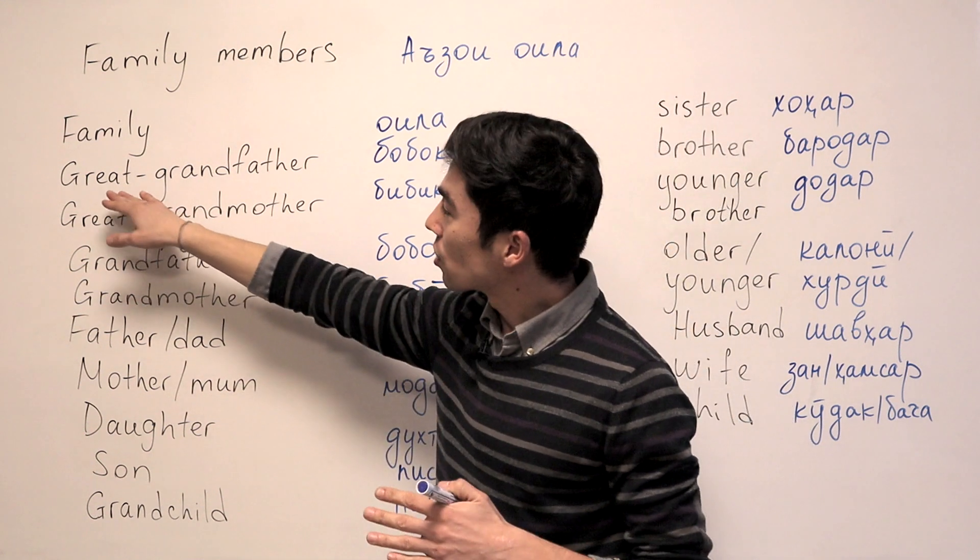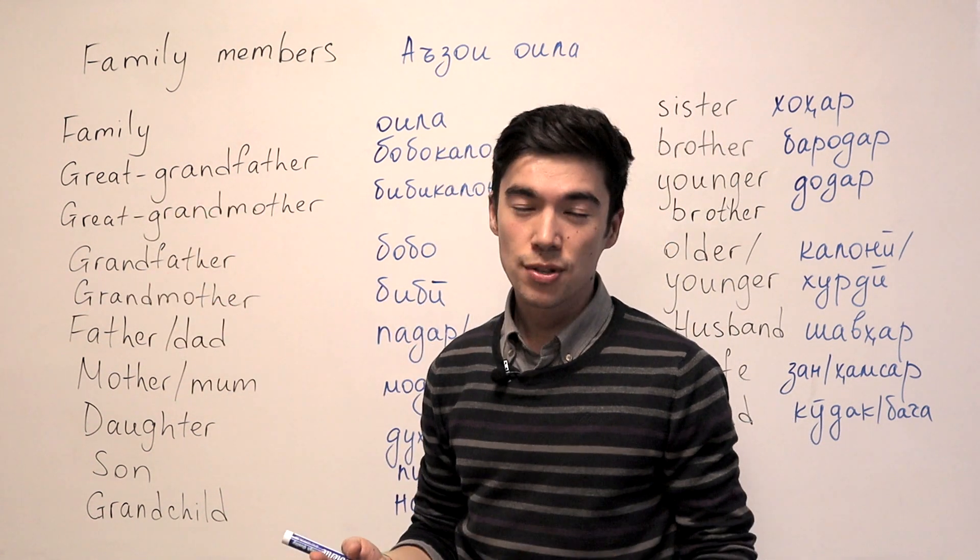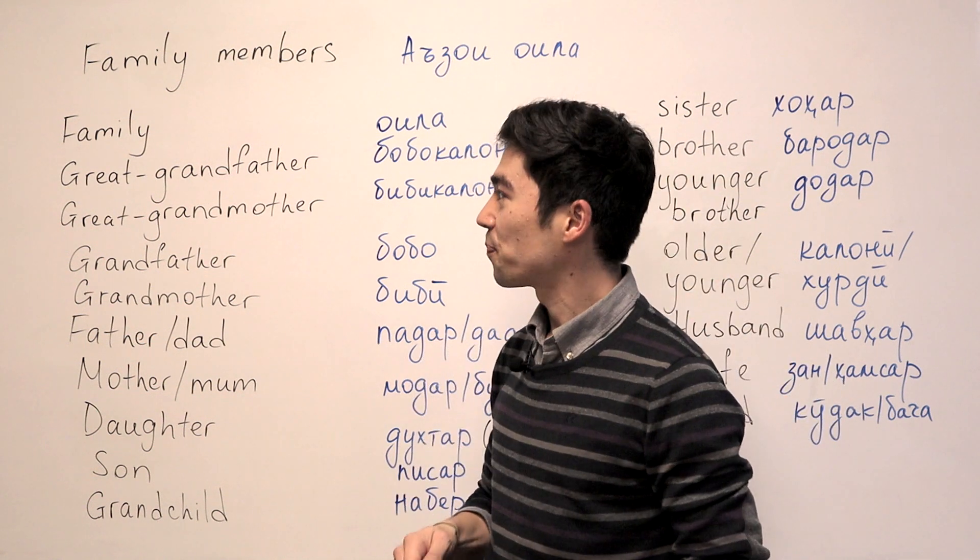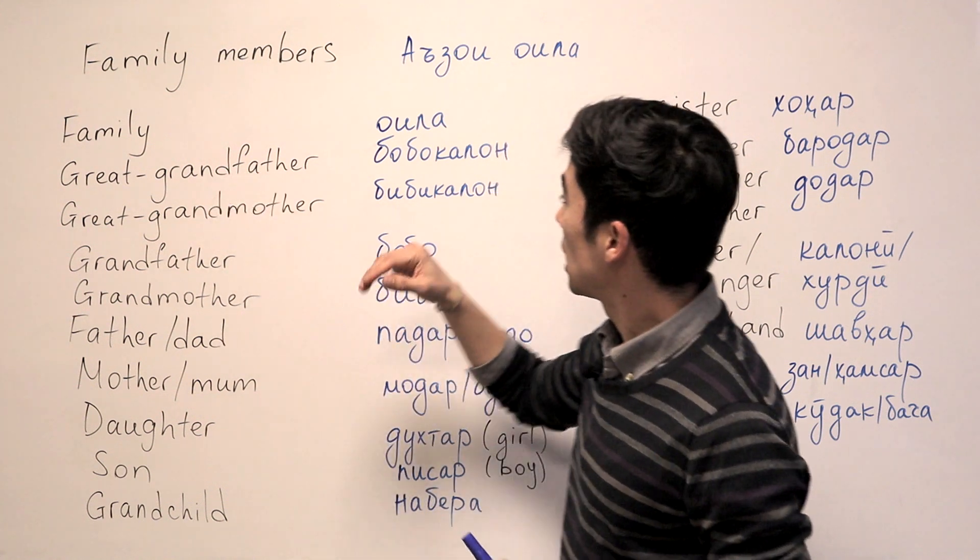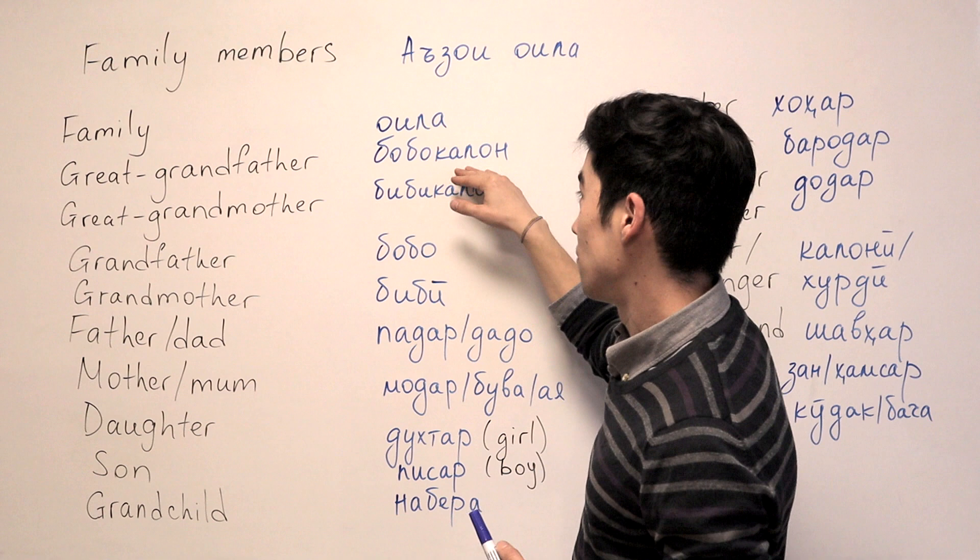I wrote here great-grandfather first because in Tajik families the oldest person is the boss always. So great-grandfather will be Bobo Kalon, and Kalon means big.